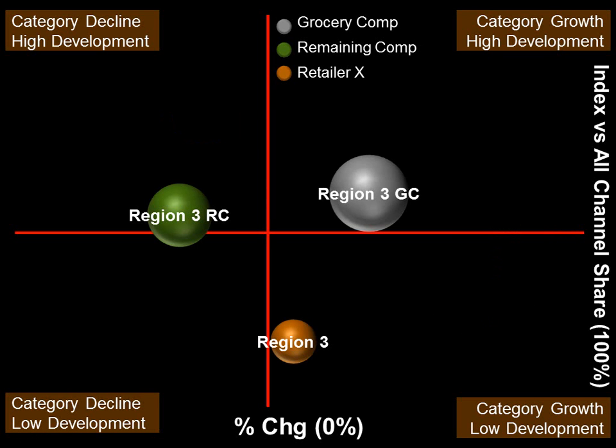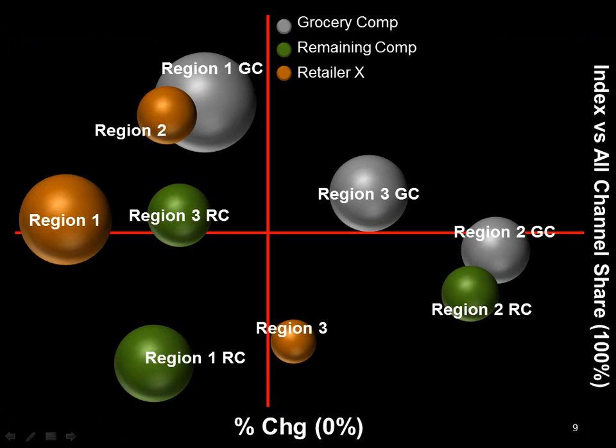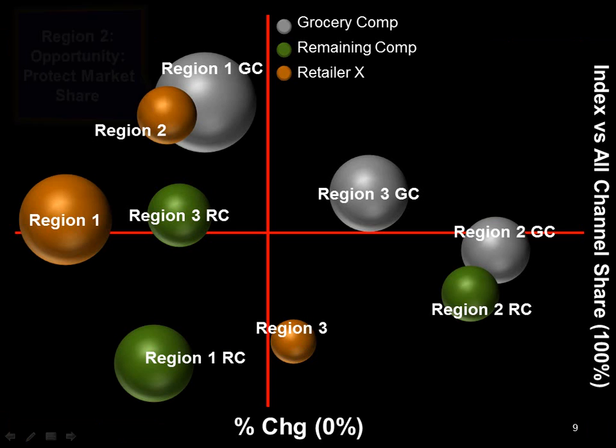Region 3 is where retailer X is below both competitors, indicating a poor index versus ACV, or development in this category relative to competition. Also, grocery competition in the grey bubble is outpacing retailer X's growth because it's further to the right on the horizontal axis. There's a lot of great information that can be gleaned from a bubble chart, and different measures will tell different stories.